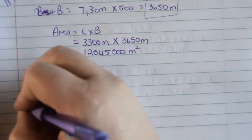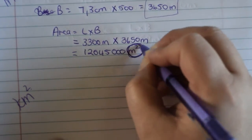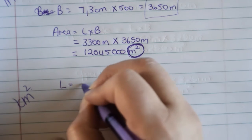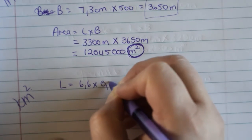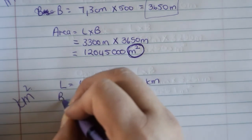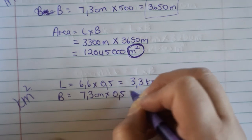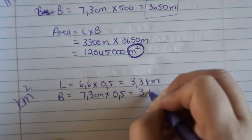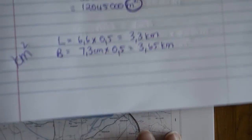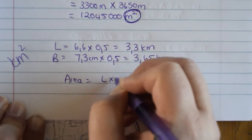If you did work with, if the question was in kilometers, please note my unit. Just note the unit. If you worked in kilometers, your length would have been 6.6 multiplied by 0.5. That would have been 3.3 kilometers. And the breadth would have been 7.3 centimeters multiplied by 0.5. And that would have been 3.65 kilometers. When you do the substitution, you will say area equals length times breadth.